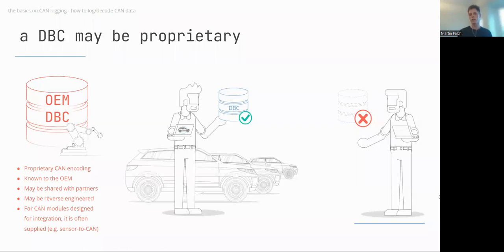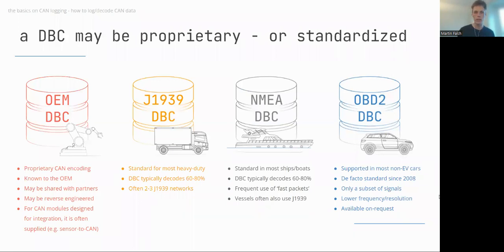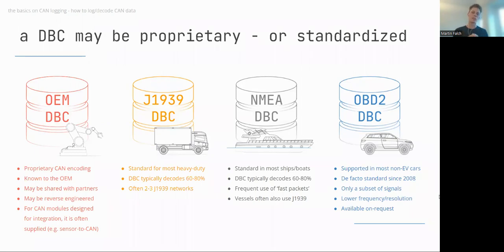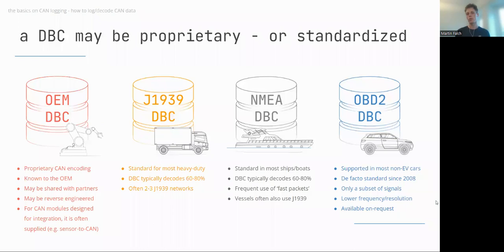Luckily there are exceptions for aftermarket users. The J1939 DBC file is standardized and allows decoding of data from most heavy-duty vehicles, covering most practical use cases. For maritime, there's an NMEA DBC file. For non-electric cars, you can use the free OBD2 DBC file. These are available on our products page and allow you to decode standardized protocol data even if you're not the OEM.